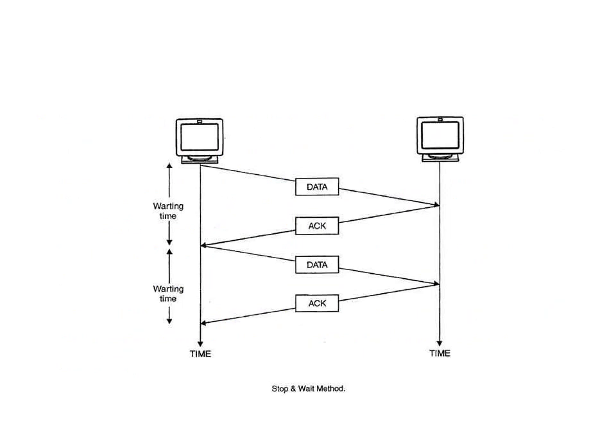The diagram explains the stop-and-wait protocol. We have a sending unit and a receiver unit. When the sender sends data, it goes to the receiver. The receiver processes the data, and once processing is done, it sends an acknowledgement. Until the sender receives the acknowledgement, the sender waits — that time is called the waiting time. Once the acknowledgement is received, the sender assumes the receiver is ready and immediately sends the new data.